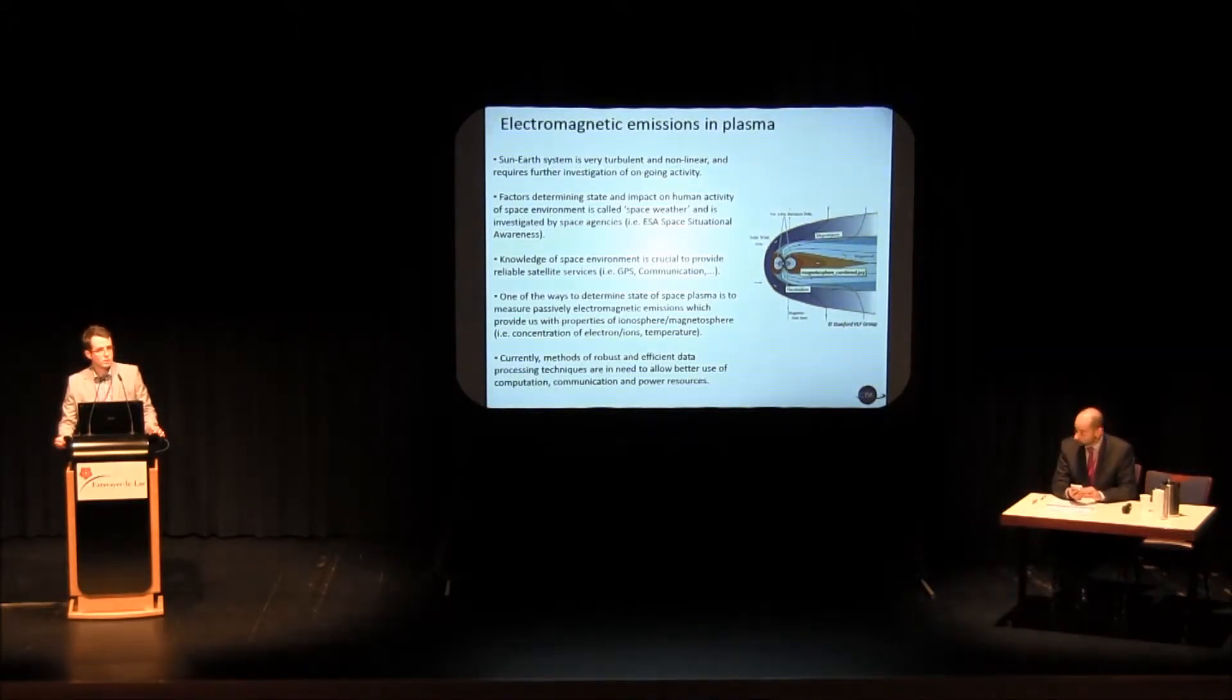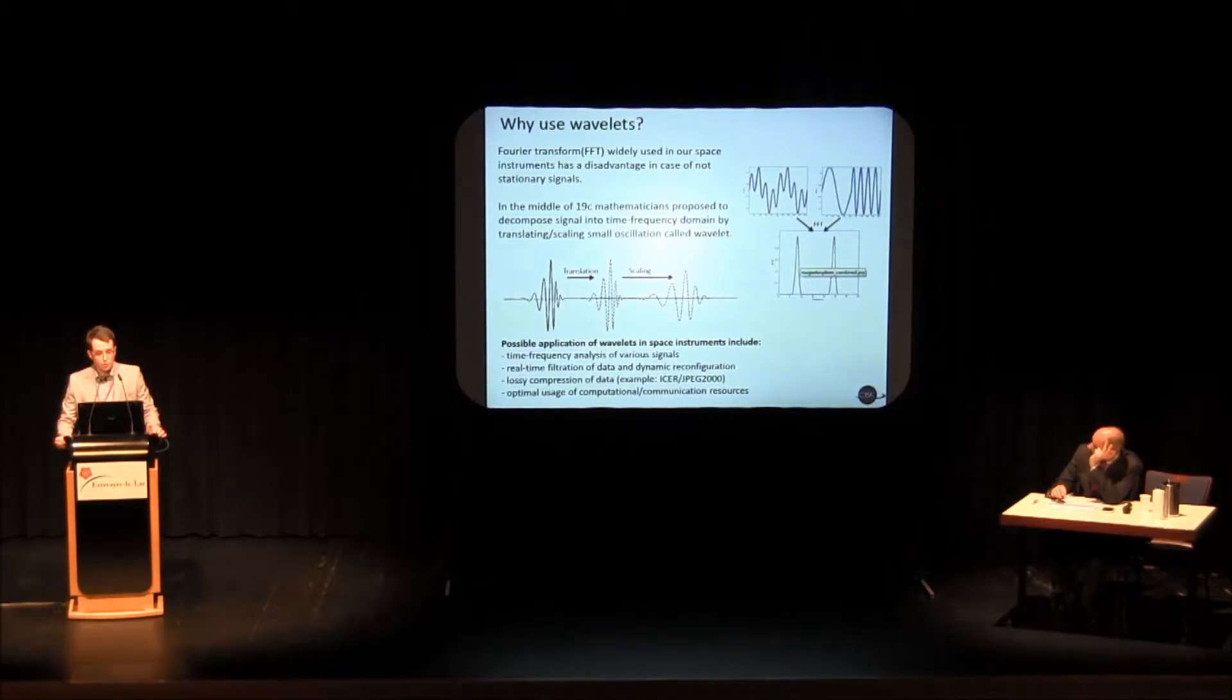It is actually quite important aspect of ESA investigation. It is mainly because the space weather is important to get reliable satellite services such as GPS or communication. And one of the ways to determine the state is to listen to natural electromagnetic emissions like plasma frequency or cyclotron frequency, which gives us information about concentrations of ions and electrons, temperature and so on. Currently at Space Research Center we are developing methods to do on-board processing more robustly. And that's why we want to use wavelets.